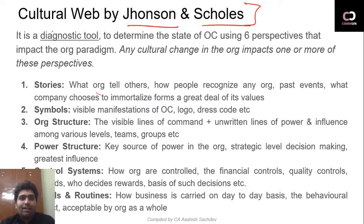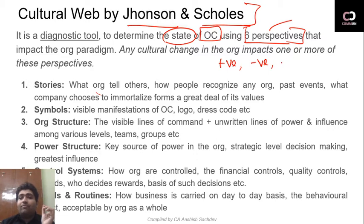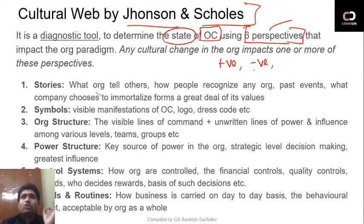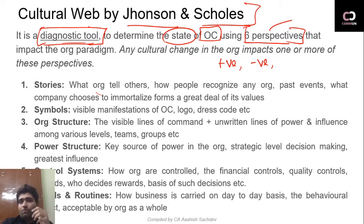Johnson and Scholes said that there are six perspectives in any organization's culture. These six perspectives determine the state of organizational culture — whether it is positive or negative, beneficial or harmful, rigid or flexible. The state of organizational culture depends on these six points. And this model they created is a diagnostic tool.